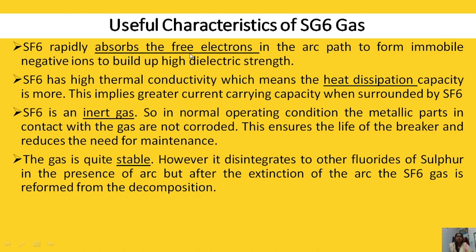SF6 gas absorbs the free electrons in the arc path to form immobile negative ions, to build up high dielectric strength. When contacts get separated, there is a formation of arc, which means there are more free electrons. But the property of SF6 gas is that it absorbs the free electrons due to its electronegativity property. That is why the build-up of high dielectric strength is faster.